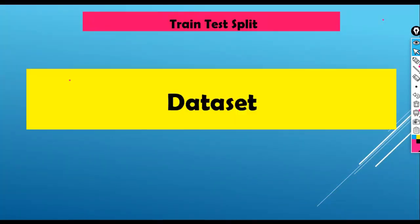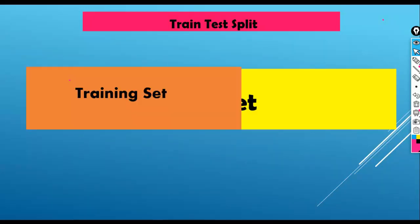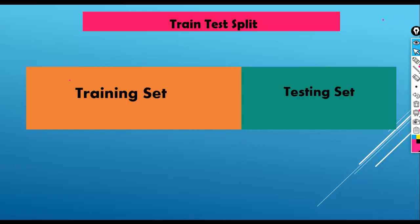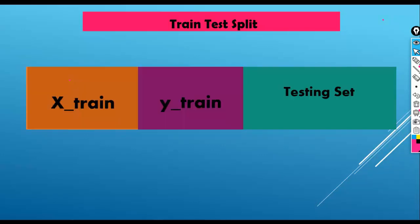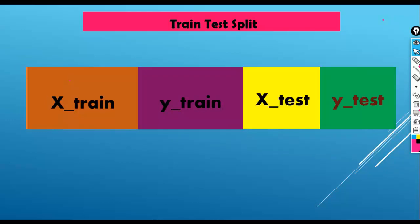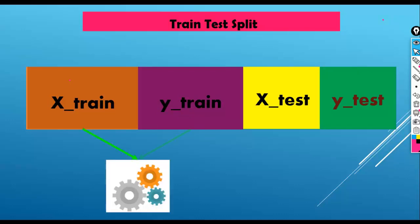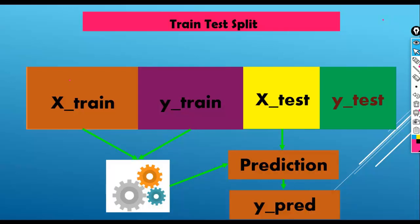To revise: train_test_split divides our dataset into two sets — training set and testing set. The training set is further divided into X_train and Y_train, and the testing set into X_test and Y_test. We train our machine learning algorithms on X_train and Y_train, perform predictions using X_test, store predicted results in Y_pred, and compare them with actual results in Y_test. This is how we use train_test_split to evaluate machine learning algorithm performance.